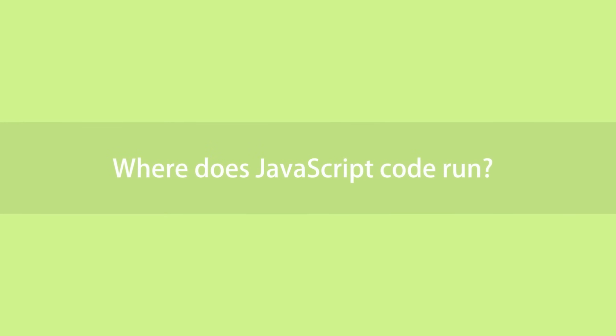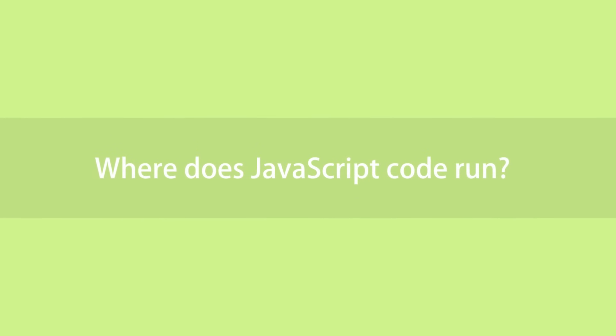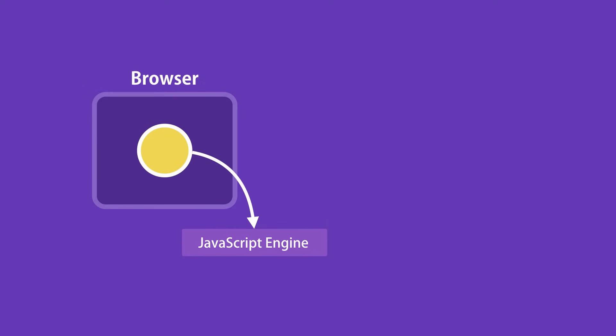Where does JavaScript code run? JavaScript was originally designed to run only in browsers. So every browser has what we call a JavaScript engine that can execute JavaScript code. For example, the JavaScript engines in Firefox and Chrome are SpiderMonkey and V8.